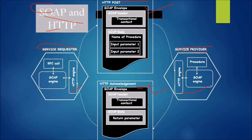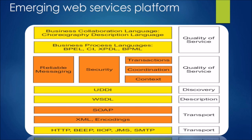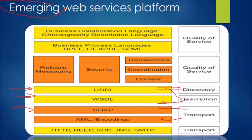The emerging web services platform includes: UDDI and WSDL for discovery and description, XML encoding for transport, and HTTP, BEEP, IIOP, JMS, and SMTP as transport protocols — since SOAP operates over these. For quality of service, you need reliable messaging, security, transaction coordination, and business collaboration and process languages.